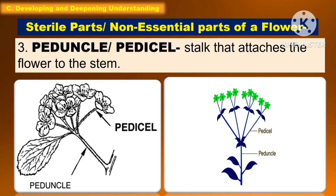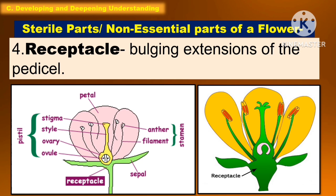Another non-essential part of the flower is the peduncle or pedicel, which is the stalk that attaches the flower to the stem. Another non-essential part is the receptacle, which is a bulging extension of the pedicel.